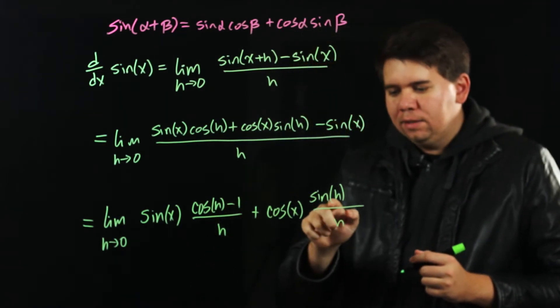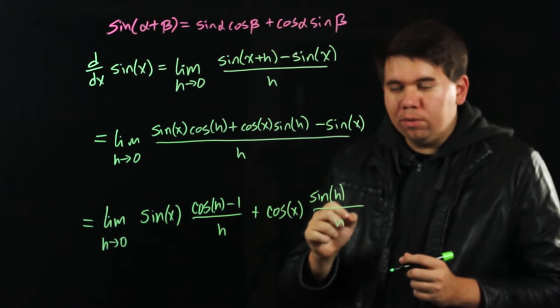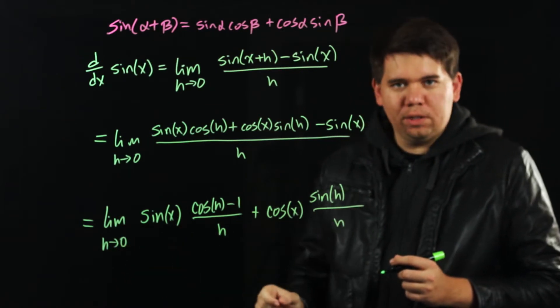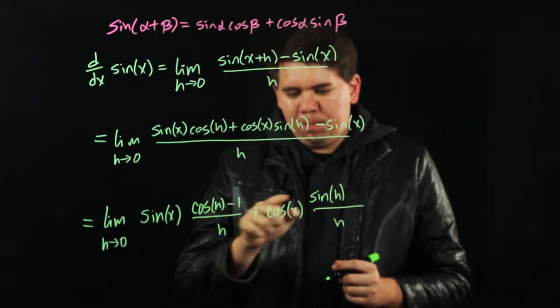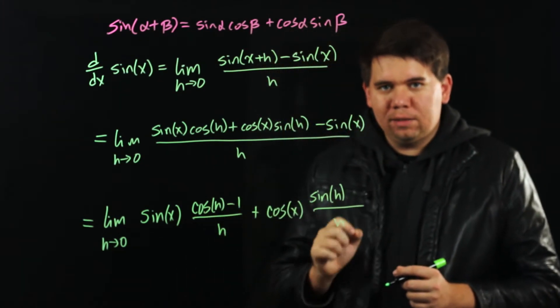In a similar way, sine of h is going to 0 as h is going to 0. So you end up with 0 over 0. So both of these pieces seem to be getting us into trouble.